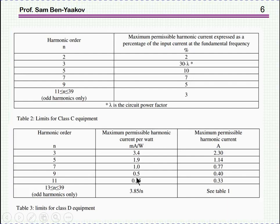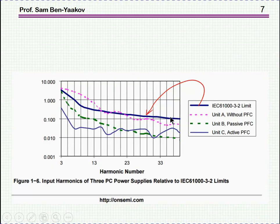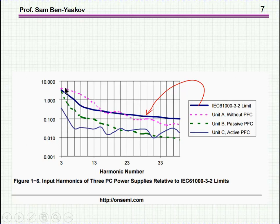Class D is also defined differently — as milliamps per watt. So for a 100-watt piece of equipment, it will be about 300 milliamps for the third harmonic. The absolute limit is 2.3 A, so even if power is very high, you cannot go above this value, which is actually the class A limit. This curve shows the limits on a logarithmic scale. The third harmonic is 2.3 A, and the limits go down for higher harmonics. Different pieces of equipment are shown as examples — most are within limits, but one is outside and will not pass the standard.